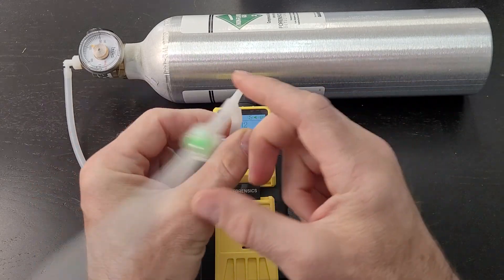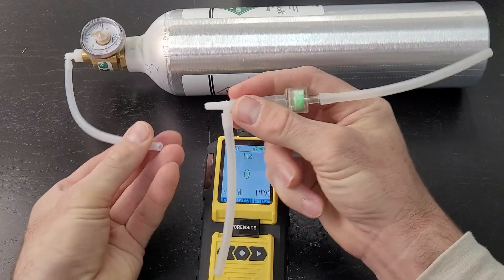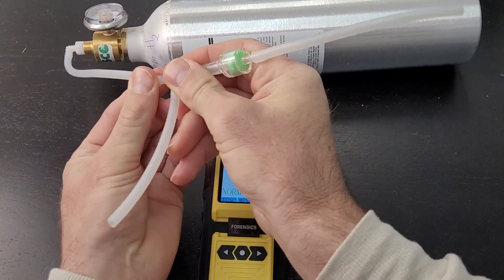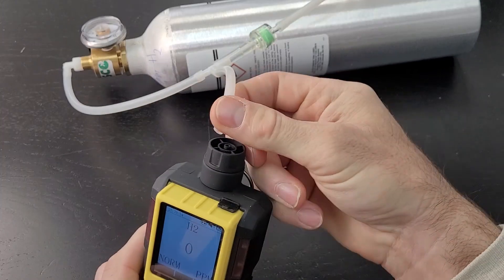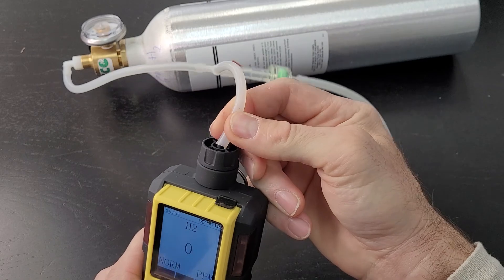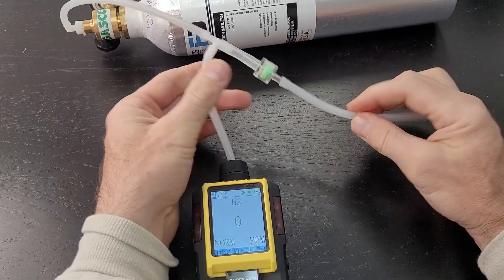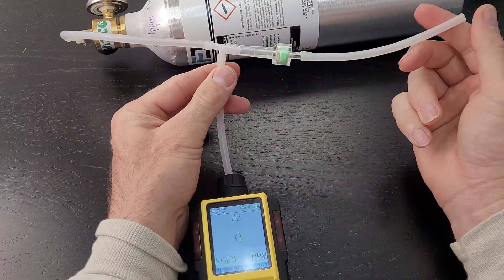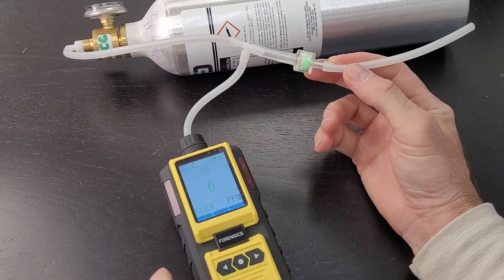So the way this works is we pop in our gas supply on one end of the T-piece, right over here. The middle part we feed into the analyzer, pop it into the barb, and that's it. The filter, which is a small particle filter, goes to the ambient. This micro pump continues to draw.